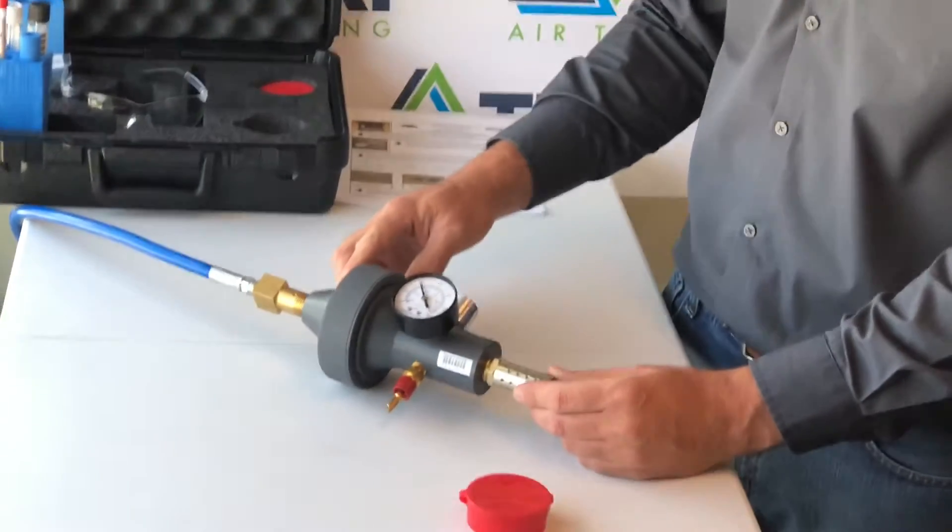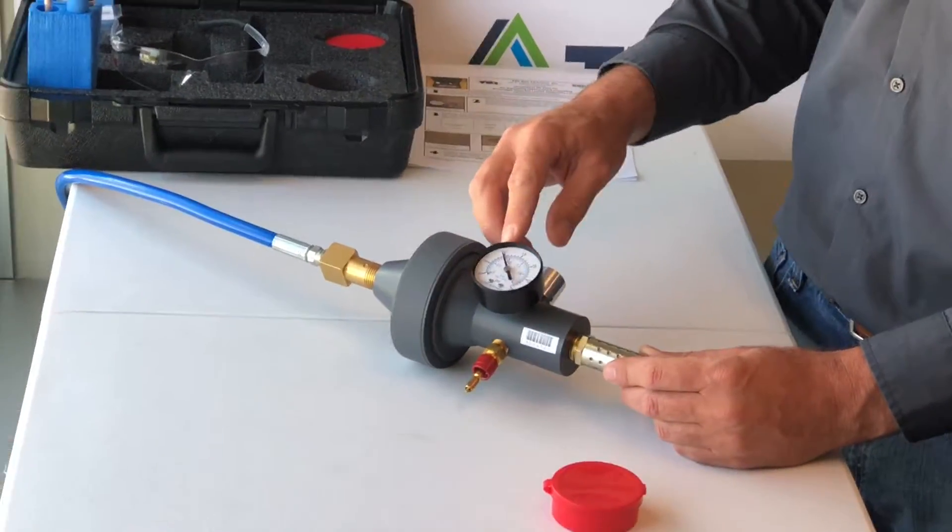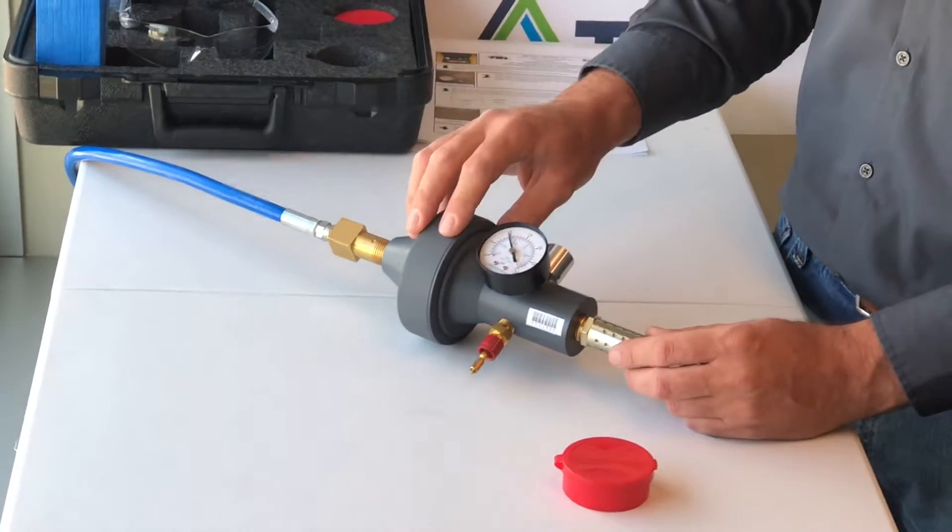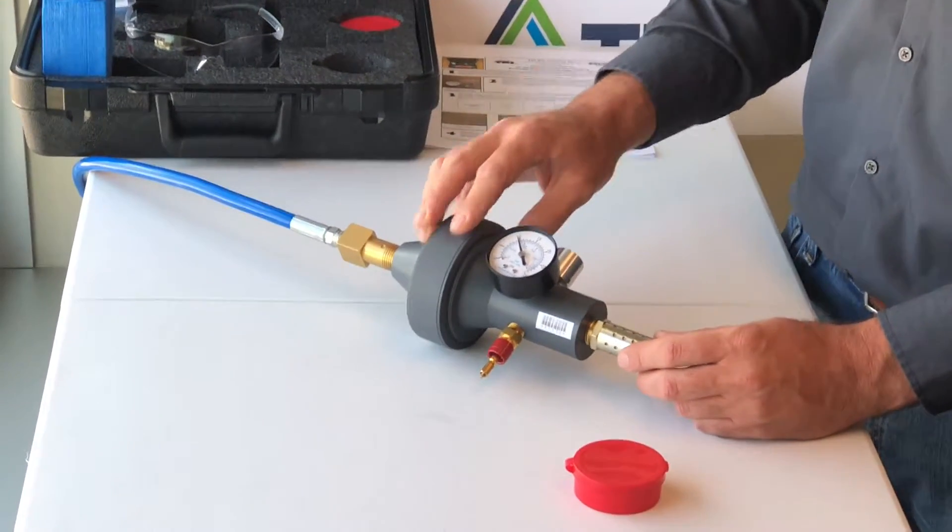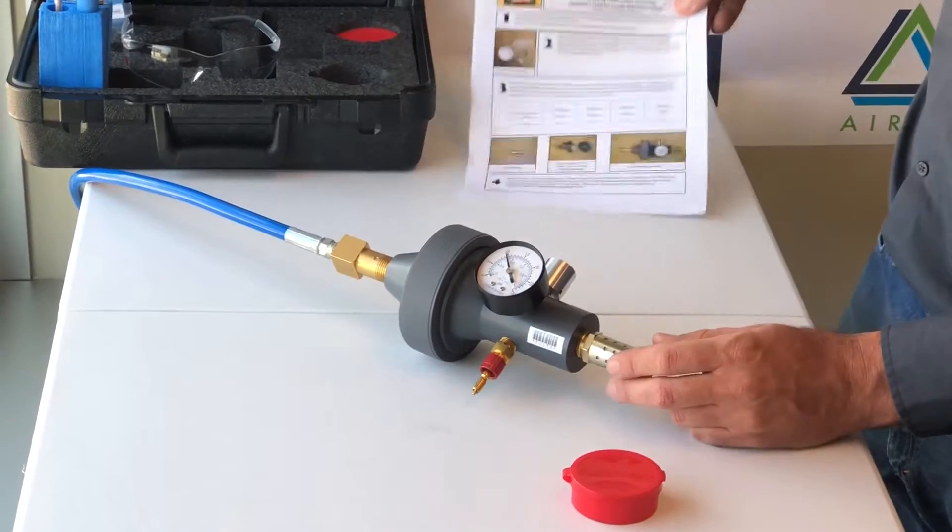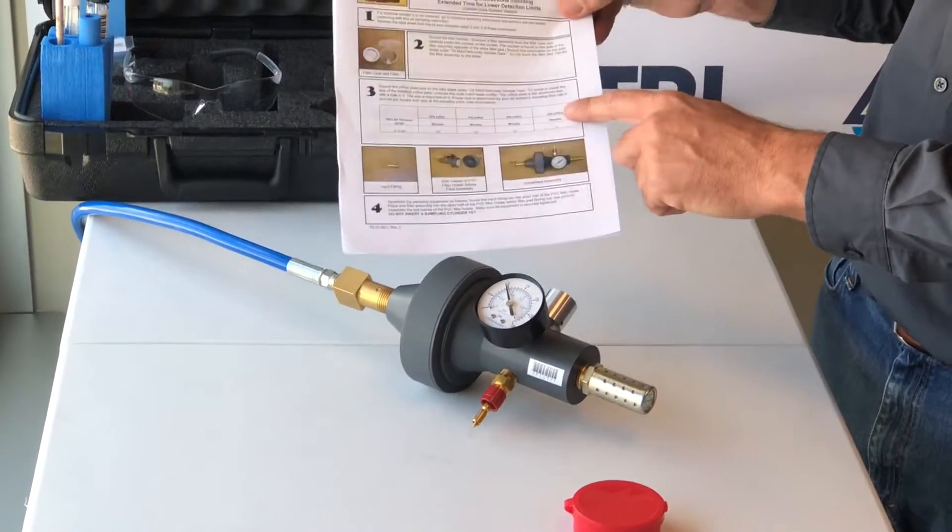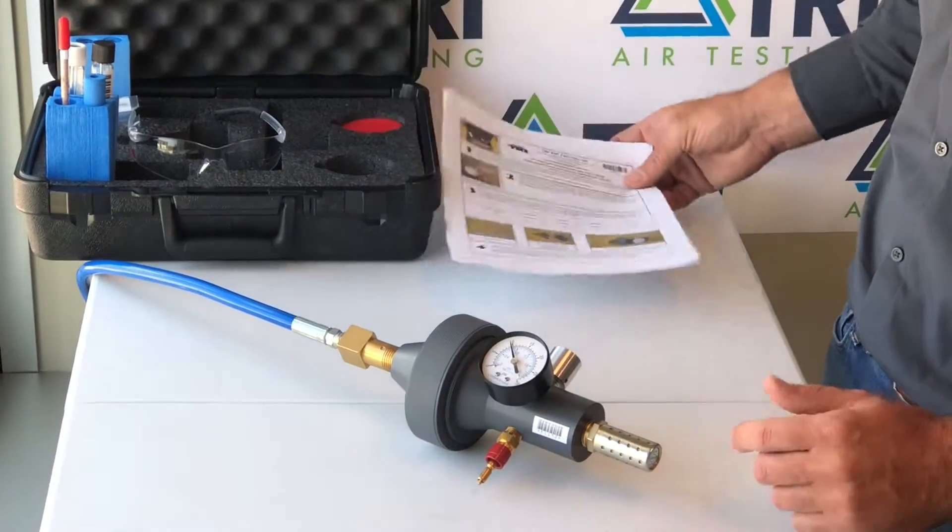Once you have your Champion 35 Test Kit hooked up to your airline and establish the correct pressure, you'll insert your filter into the housing and collect your sample based off the pressure and time requirements of your instructions. I'll demonstrate that step for you now.